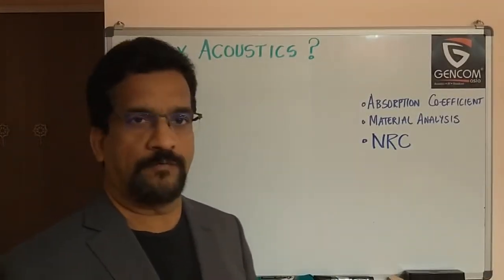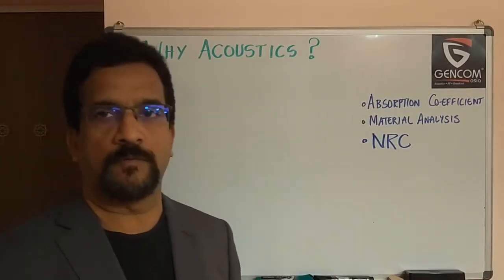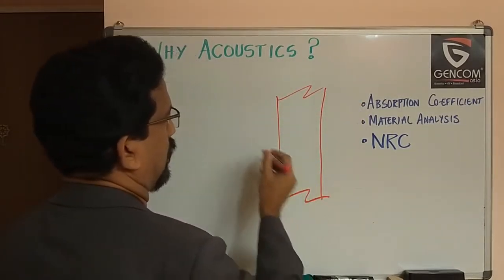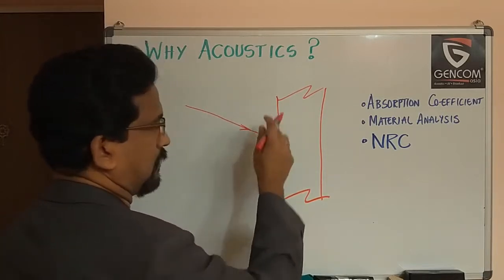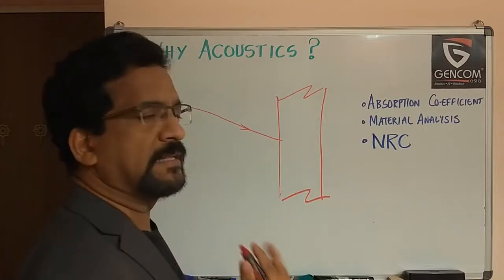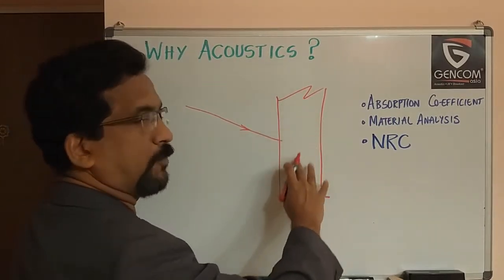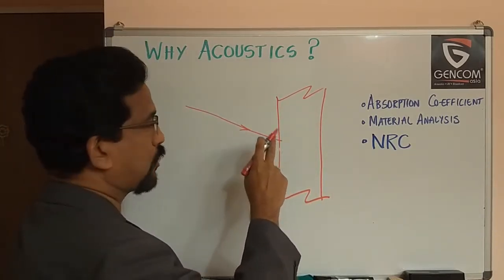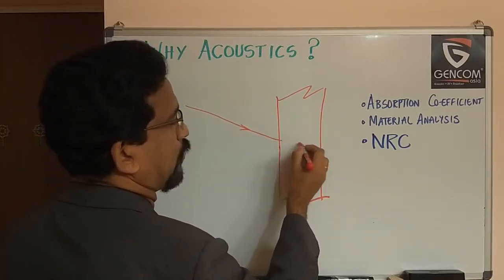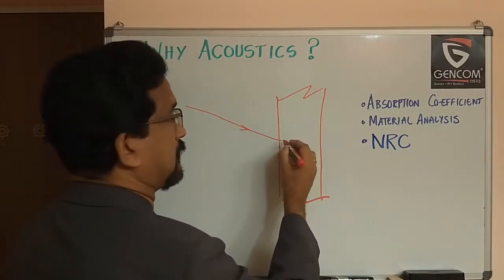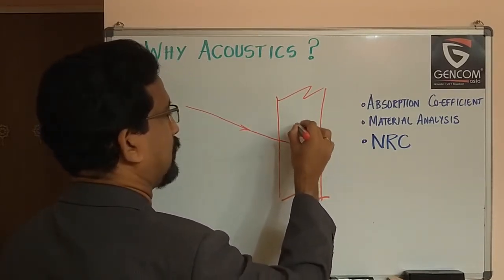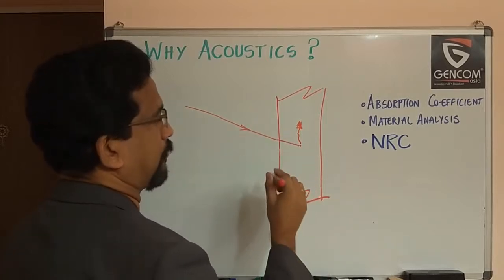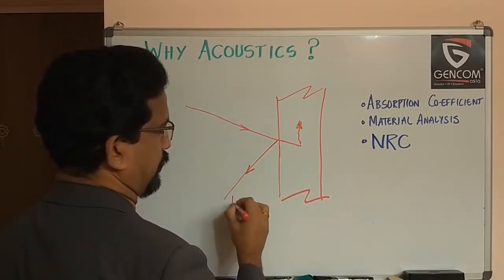When we talk about absorption coefficient, we are talking about the absorption of a material. Consider some material X — a sound wave is going to hit this particular material. Depending on the density of the material, a little bit of sound may go inside and a very small amount of heat may be generated, and some sound may get reflected. That reflected component we call reflection.